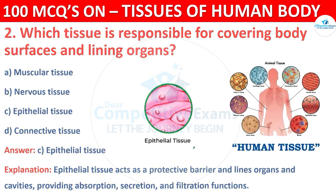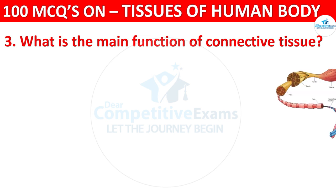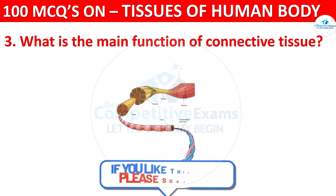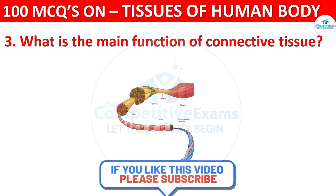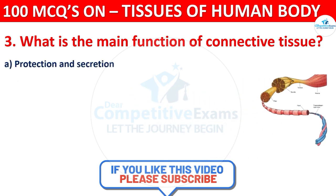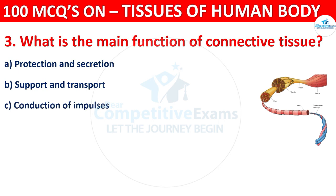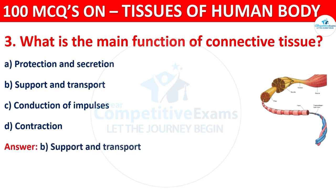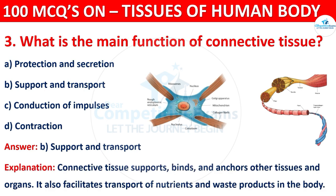Question number three: what is the main function of connective tissue? Your options are protection and secretion, support and transport, conduction of impulses, or contraction. The correct answer is B, that is support and transport. Connective tissue supports, binds, and anchors other tissues and organs. It also facilitates transport of nutrients and waste products in the body.